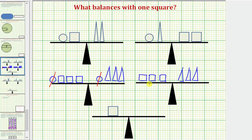Well if three squares balance with three triangles, then one square would have to have the same weight as one triangle, or one square would balance with one triangle. Which is our answer.